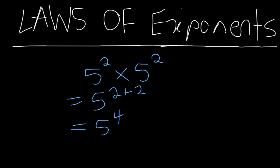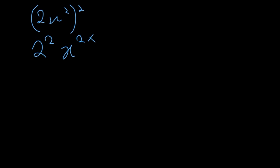Now let's look at another example where you have an exponent raised to another exponent. Here we have (2x²) raised to the power of 2. According to the laws of exponents, when an exponent is raised to another exponent, you multiply the indices. So that will be 2 raised to the power of 2, multiplied by x raised to the power of 2 multiplied by 2, giving a final answer of 4x to the power of 4.